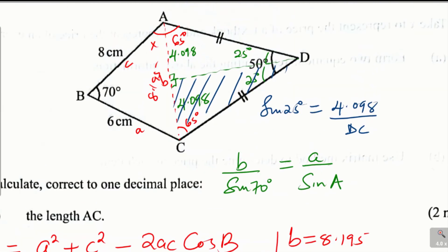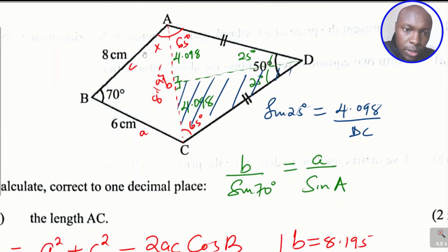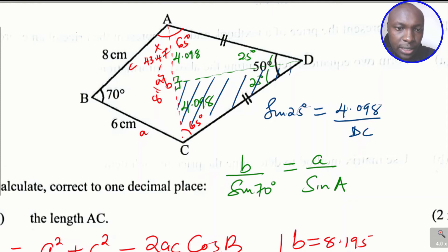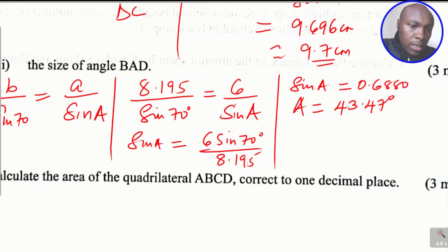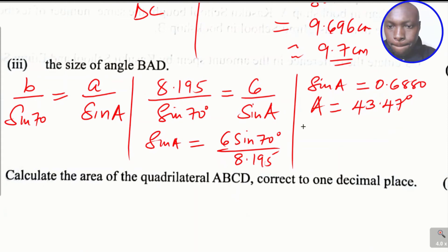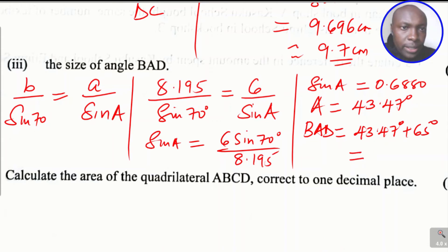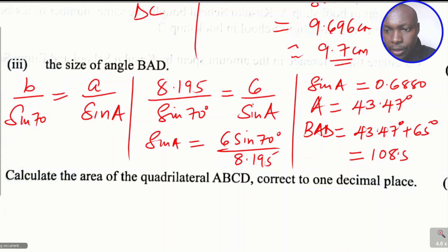So angle BAC is 43.47 degrees. To get the full angle BAD, we add angle BAC to the base angle of the isosceles triangle: 43.47 degrees plus 65 degrees equals 108.5 degrees. That is angle BAD.